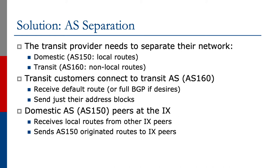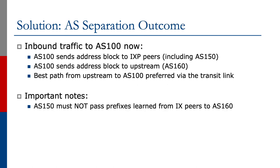Transit customers receive the default route or full BGP if they want it, and they send just their address blocks. The domestic AS150 peers at the Exchange Point, receives local routes from other IX peers, and sends AS150-originated routes to the IX peers. Inbound traffic to AS100 now follows the expected paths. AS100 sends the address block to IXP peers including AS150, and also sends the address block to upstream AS160. The best path from the upstream to AS100 is now over the transit link. AS150, the domestic network of the transit provider, does not announce AS100's peered routes to the upstream transit provider.